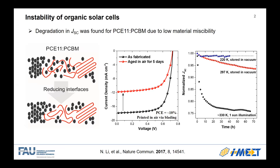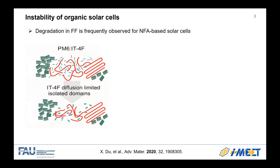These losses in JSC can only be stopped by keeping the cells at low temperature. We also found that for cases based on non-fullerene acceptors, because of this low miscibility, it will also cause a degradation — but not in JSC, but in fill factor.